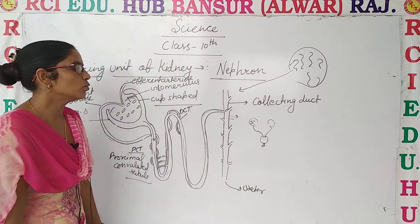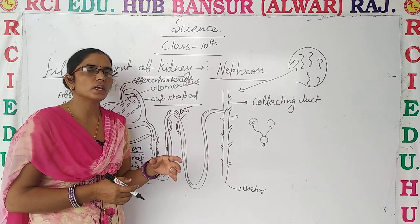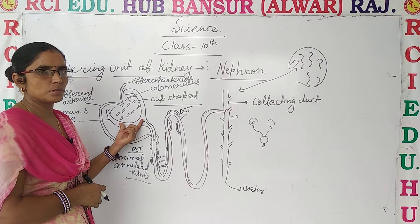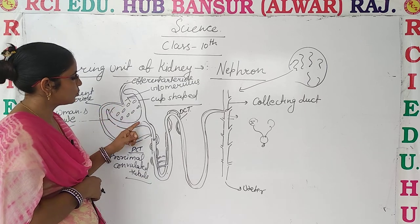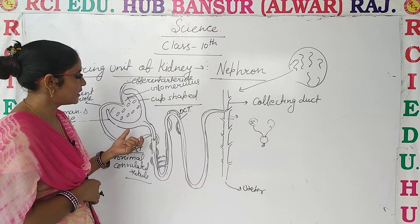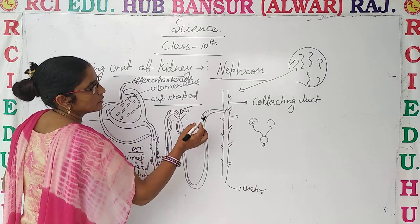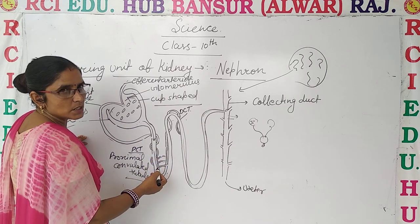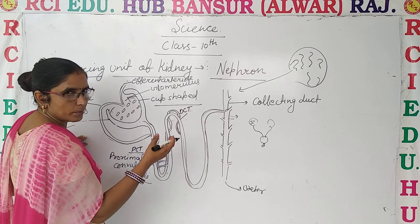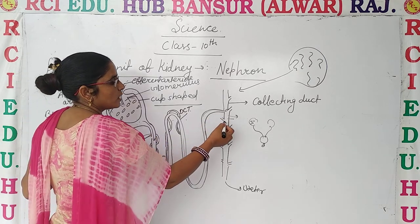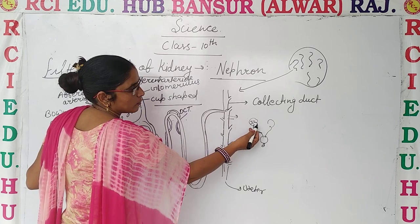In summary, the kidney contains the nephron as its filtration unit. The Bowman's capsule is a cup-shaped structure containing the glomerulus, where blood filtration takes place. Pure blood goes back into circulation, while waste products — including salts and urea — pass through the tubular part. Useful components are reabsorbed by the arteries surrounding the tubules, and the remaining waste is collected in the collecting duct, then passed into the urine.